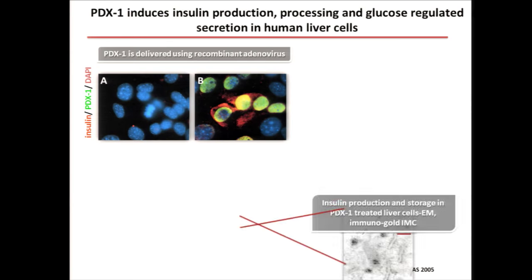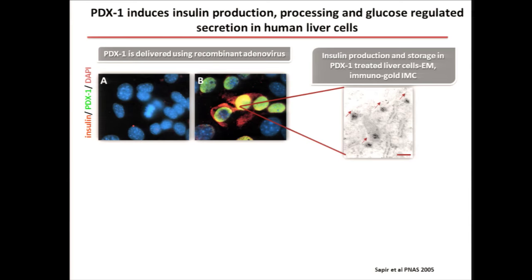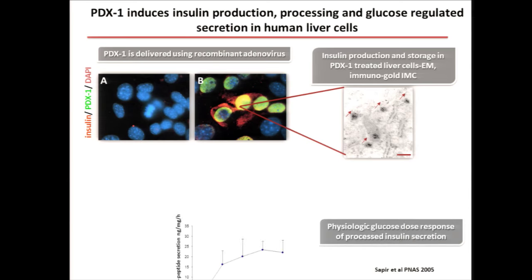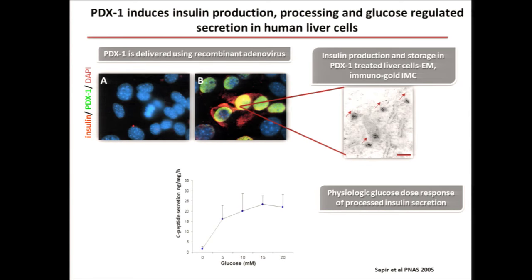We moved to an in vitro system of adult human liver cells and showed that ectopic expression of PDX1 actually activates insulin production. Insulin is stored in secretory vesicles, is processed — which is very important — and is secreted in a glucose-regulated manner within the physiological range. When we did the same thing in human keratinocytes, the glucose dose-response was abnormal. You can efficiently activate the pancreatic lineage but not all the function of a pancreatic beta cell, as you can in liver.